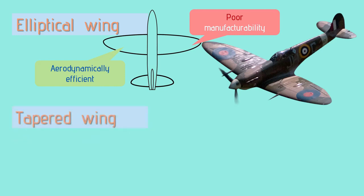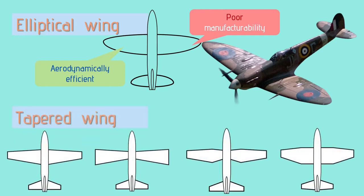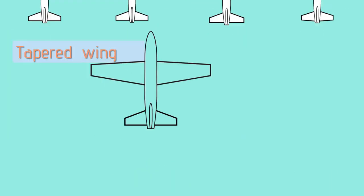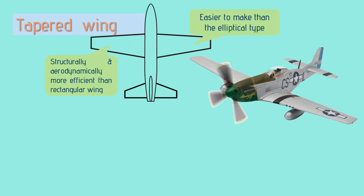Next comes tapered wing. Tapered wings are basically of four types: taper, reverse taper, compound taper, and taper outboard. Tapered wing is a modified version of rectangular wing, which is a line between moderate efficiency and moderate manufacturability.